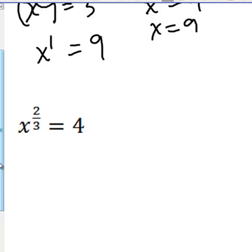So, for instance, if we had x to the 2 thirds equals 4, we will raise both sides to the reciprocal of 2 thirds.